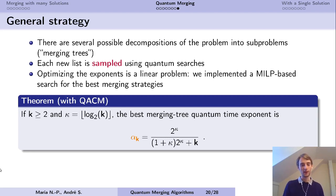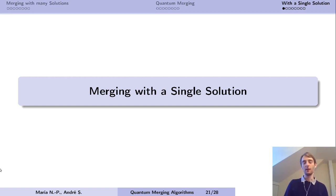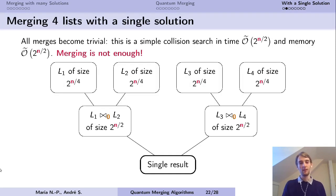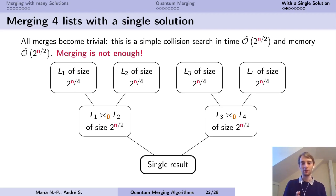Among the examples mentioned at the beginning, they were actually all for the single solution case. Sometimes we also have intermediate cases with few solutions only. If there is a single solution to find, we can try to merge as well — but we run into trouble. In the four-list example, all merges become trivial, because if we put a non-trivial prefix in the join operators, we are going to miss the solution. So in fact we can't really merge; we're forced to do something trivial.